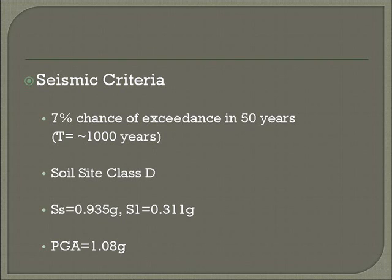Seismic design criteria for the retrofitted structure include an event with a 7% chance of exceedance in 50 years, which comes out to a return period of about a thousand years. The given soil site class was Class D, with a short-period coefficient of 0.935 and a one-second coefficient of 0.311. A peak ground acceleration was calculated at 1.08g.